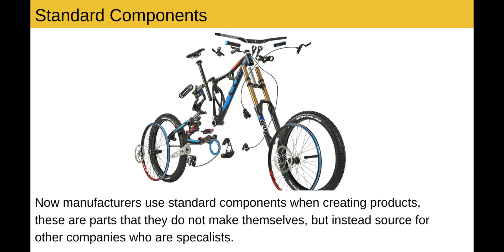Now manufacturers use standard components when creating products. These parts are parts that they do not make themselves, but instead source from other companies who are specialists in those parts. So for example, bicycle manufacturers may not make gears — they would go to a gear manufacturer to buy gear sets from them.